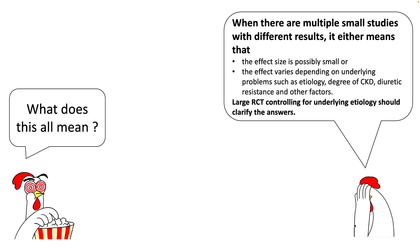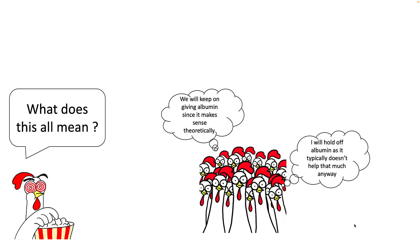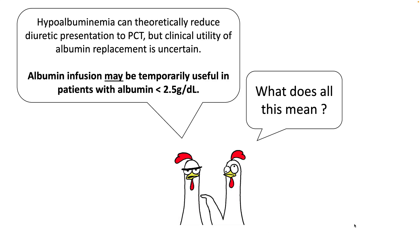By 24 hours, the amount of urine production and natriuresis were not statistically significant. When there are multiple small studies with different results it usually means the effect size is either possibly very small, or significant but dependent on various underlying problems such as etiology, degree of CKD, diuretic resistance, and other factors — and you really need a large randomized controlled trial to answer your questions.